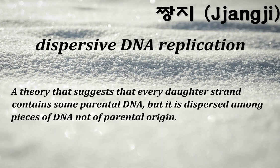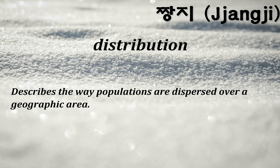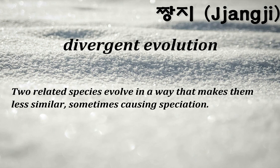Dispersive DNA replication: a theory suggesting that every daughter strand contains some parental DNA, but it is dispersed among pieces of DNA not of parental origin. Disruptive selection: selection is disruptive when individuals at the two extremes of a spectrum do better than the more common forms in the middle. Distribution: describes the way populations are dispersed over a geographic area. Divergent evolution: two related species evolve in a way that makes them less similar, sometimes causing speciation.